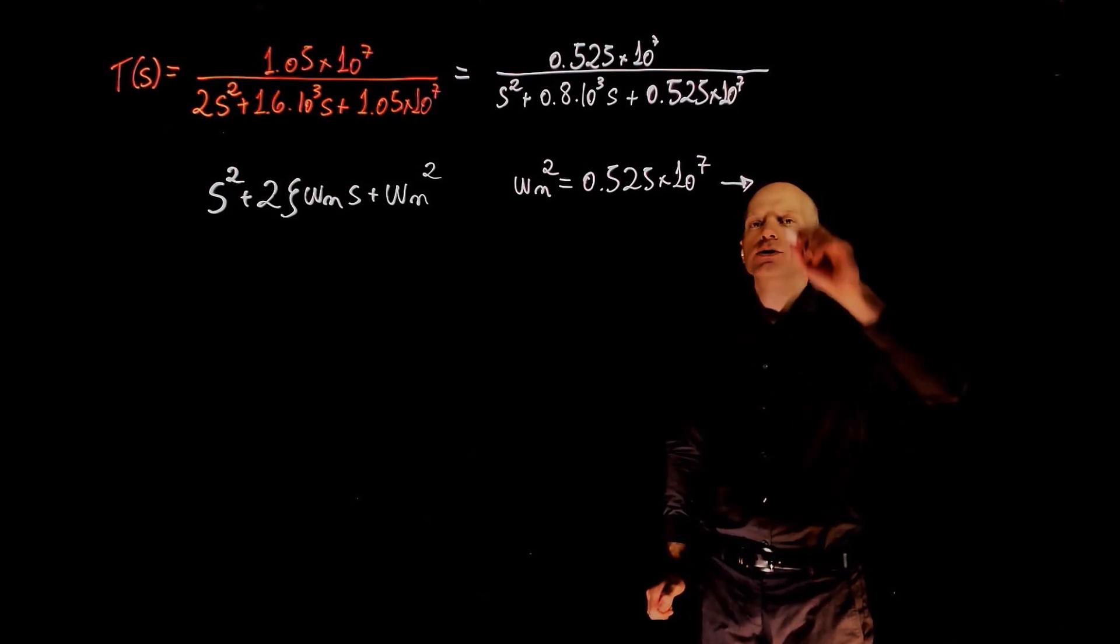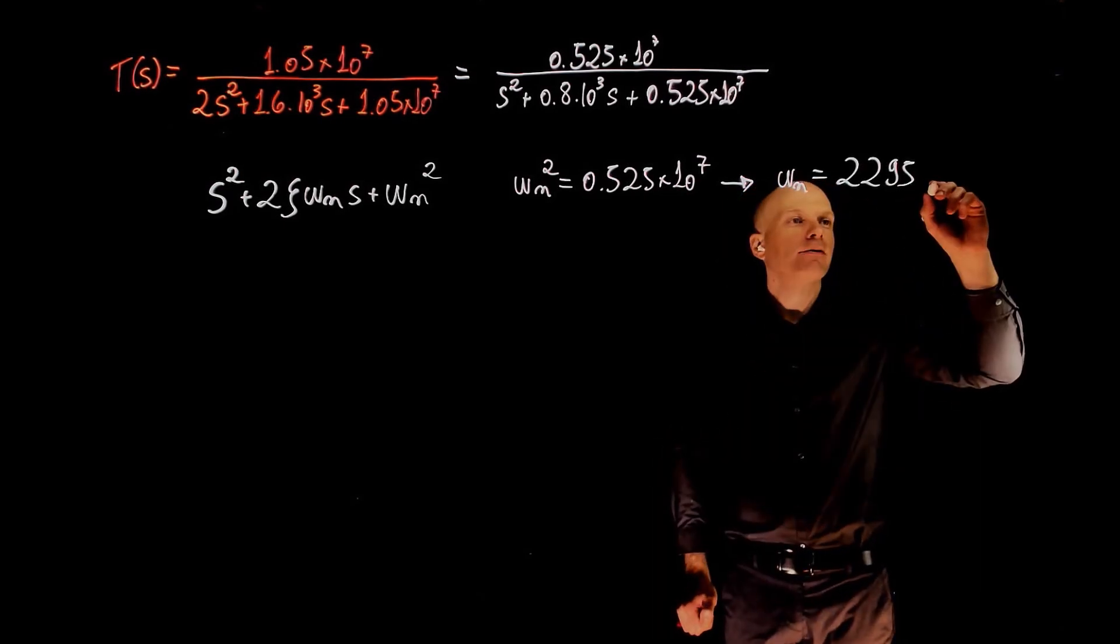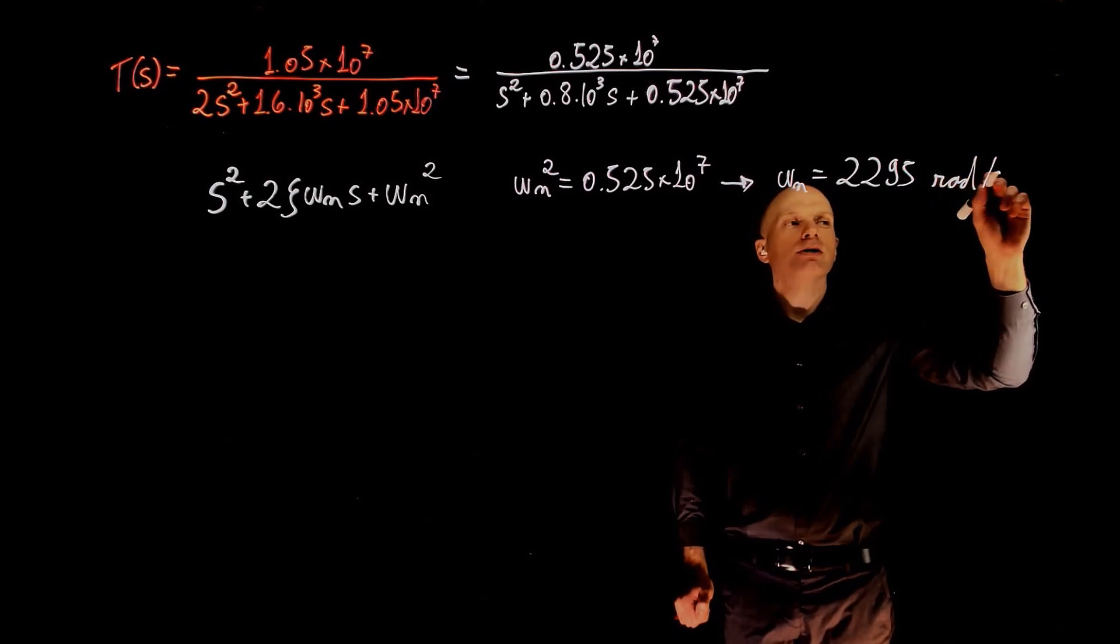Solving for this gives omega n as 2295 radians per second.